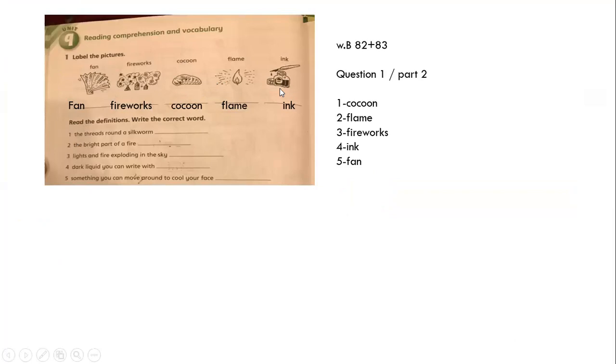Now, let's read the definition and we are going to write the correct word. The thread around the silk core, that's cocoon. The bright part of a fire, related to flame. Light and fire exploding in the sky, related to fireworks. Dark liquid you can write with, ink. Something you can move around to cool your face, fan.